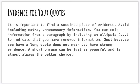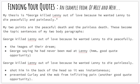When finding a succinct piece of evidence, it needs to really help prove your ideas. Avoid including extra unnecessary information — you can omit information from a quote by including an ellipsis, those three dots, to indicate removed content. A long quote does not mean strong evidence. A short phrase can be just as powerful and is almost always the better choice because it's concise, specific, and doesn't interrupt your argument. Choose the most important words.